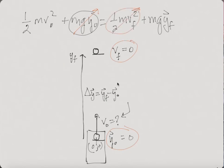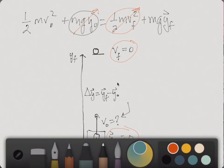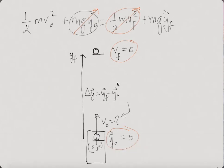We end up with a reduced equation. And that reduced equation looks like 1/2 mv initial squared equals mgy final.